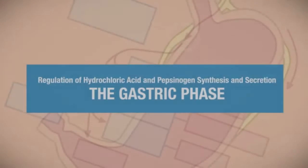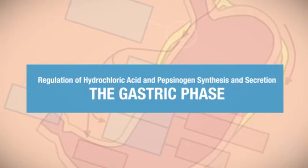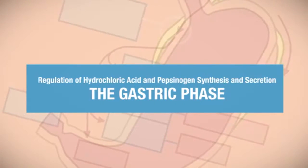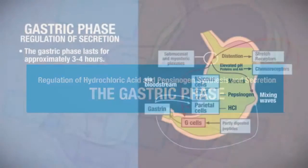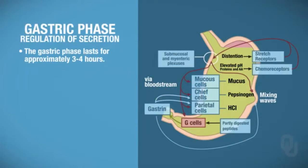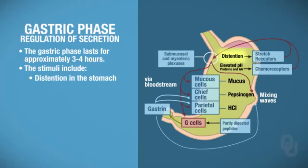Following the cephalic phase, the gastric phase occurs. The gastric phase has a duration of three to four hours and is more complicated. The stimuli include distension of the stomach — this phase originates because of stimuli in the stomach. Additional stimuli include elevated pH in the stomach.